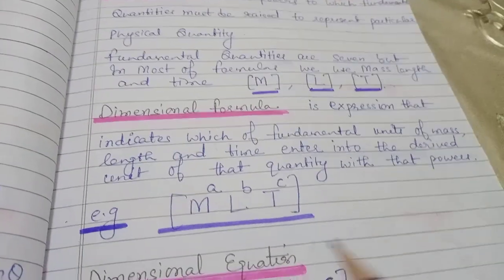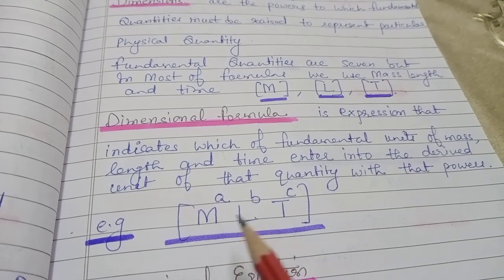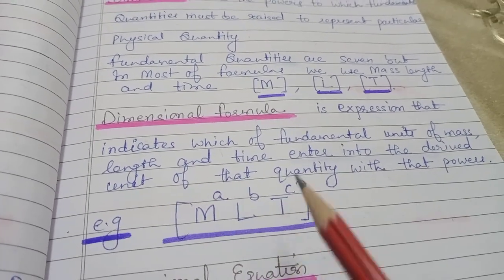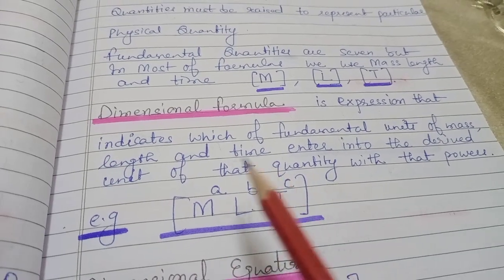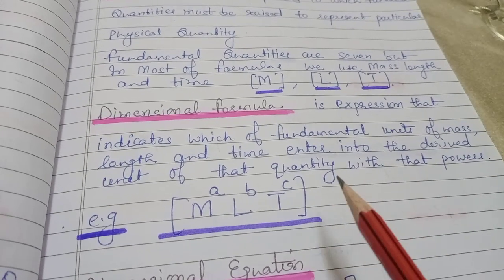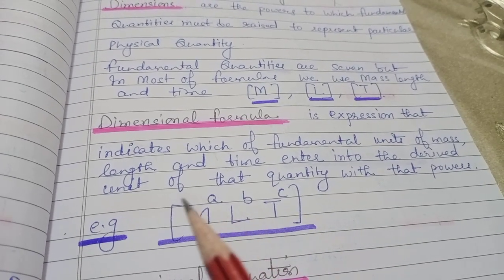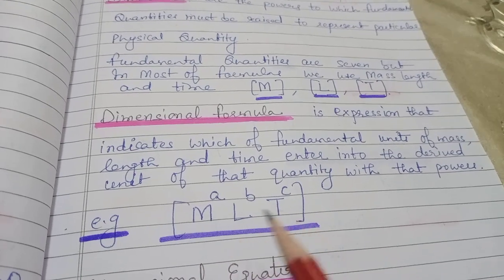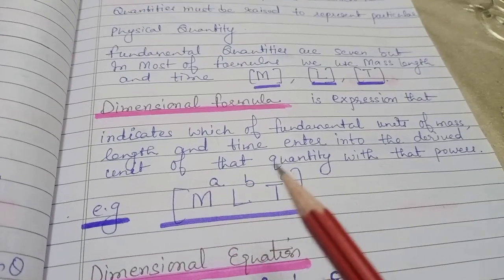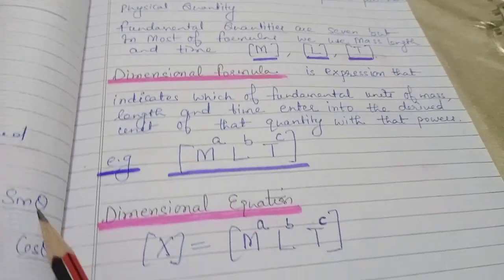Dimensional formula क्या है? इसको square bracket में लिखना है। उस physical quantity में mass की power कितनी है, length की power कितनी है, time की power कितनी है — इस पूरे expression को dimensional formula बोलते हैं। Basically dimensional formula में: square bracket, और M, L, T के ऊपर powers — उस physical quantity में mass है या नहीं, distance है या नहीं, time है या नहीं, और कितनी-कितनी गुना है — वो सारी powers लिखके जो formula बनता है, उसको उस quantity का dimensional formula बोलते हैं।